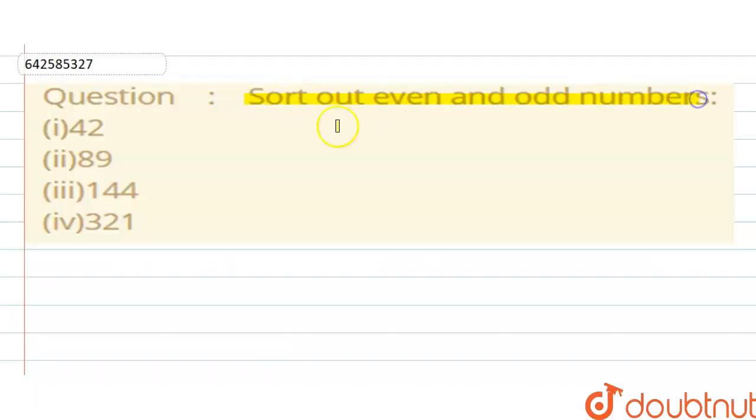The numbers will be 42, 89, 144, and 321. And we have to find which is the even number and which is the odd number.